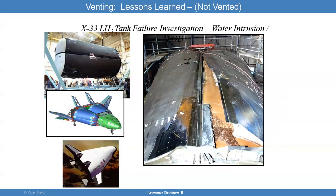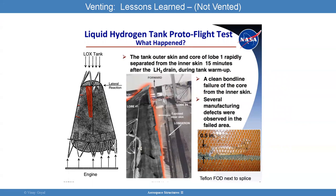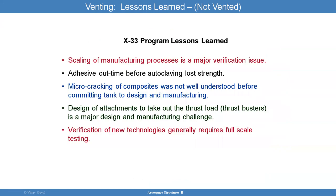The X-33 tank failure was also due to a honeycomb issue that involved venting. The tank outer skin and core rapidly separated from the inner skin 15 minutes after the LH2 drained. There was a clean bond line failure due to a manufacturing defect in the area of concern.